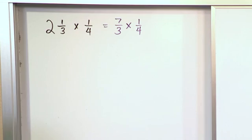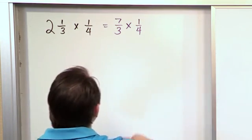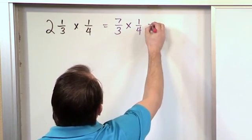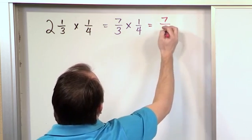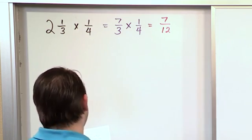So what we have right there is two fractions that we know how to multiply. Any two fractions we just multiply the numerators and multiply the denominators. So seven times one is seven, three times four is twelve. So we have seven twelfths is the answer.